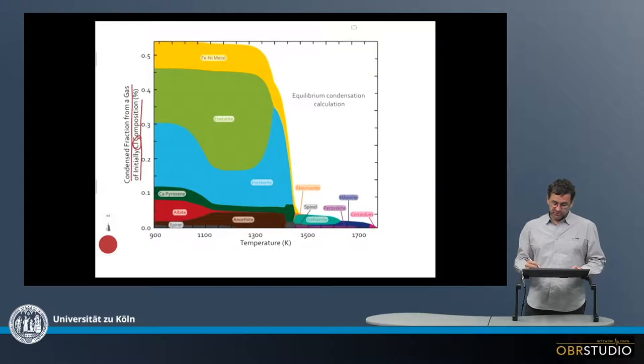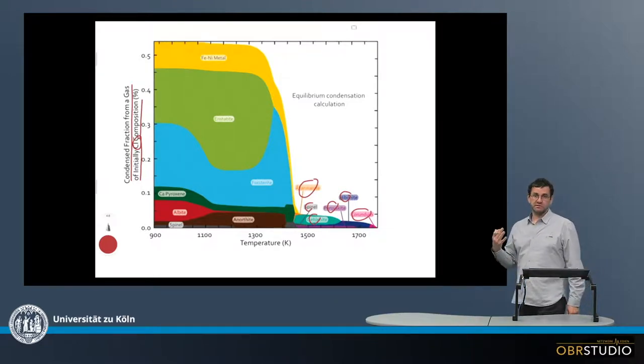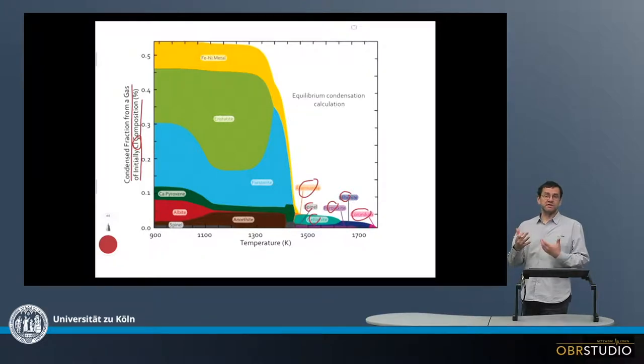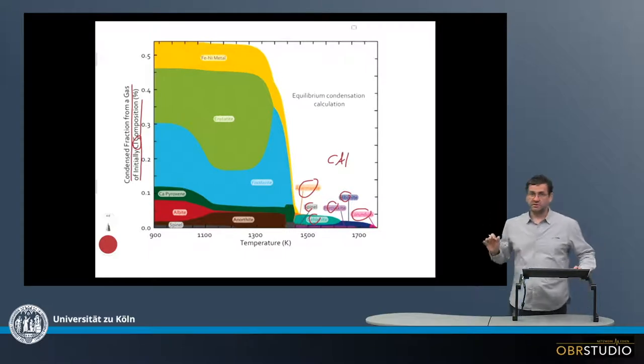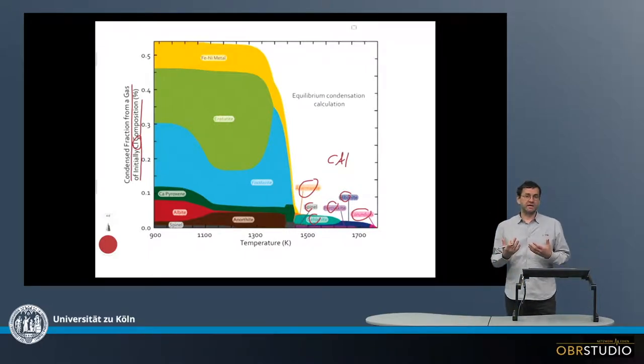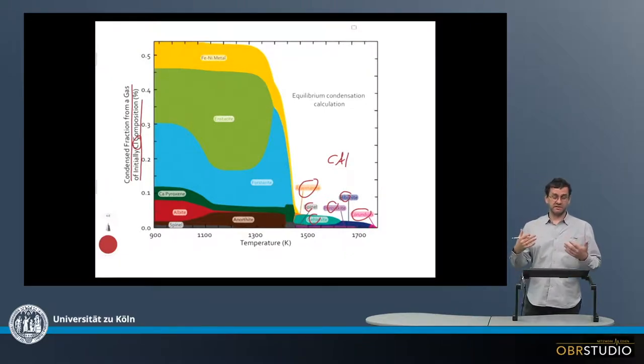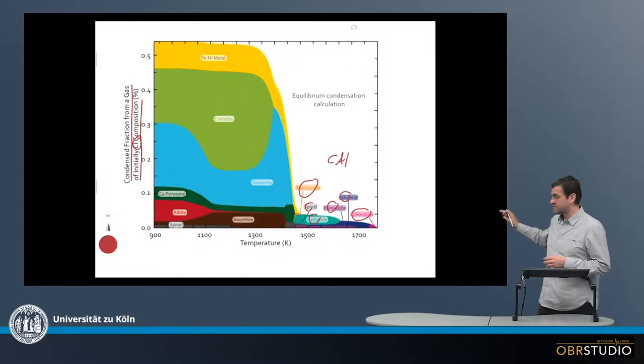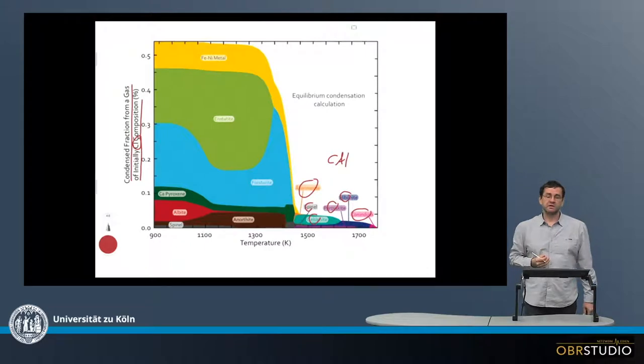So the first minerals to form are for example corundum, hibonite, perovskite, gehlenite, spinel, akermanite. These are all calcium-aluminum rich minerals. And these minerals then constitute the CAIs. So this is all CAI material here that initially formed. And because calcium and aluminum have an abundance about an order of magnitude lower than magnesium silicon, all this CAI material here is also at least an order of magnitude below the other minerals here.